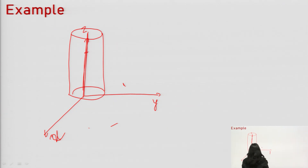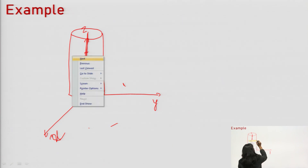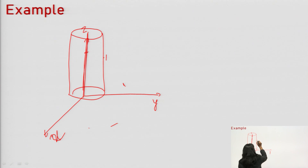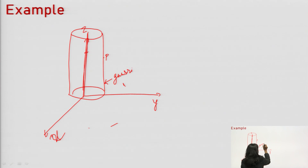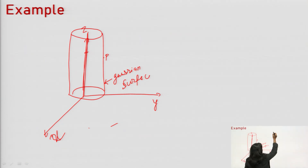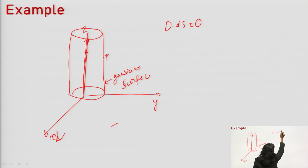We already discussed that for an infinite line charge, we will take a cylindrical Gaussian surface. This is the Gaussian surface. If we need to find the value of electric field at point P, then we will make the Gaussian surface by including the point of interest where we want to find the value of electric field. According to Gauss law, D dot ds equals Q enclosed.